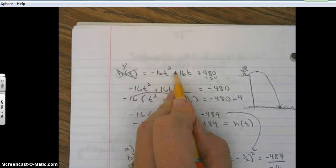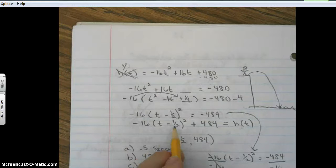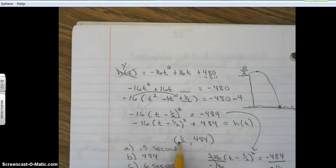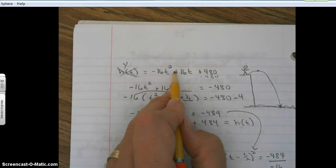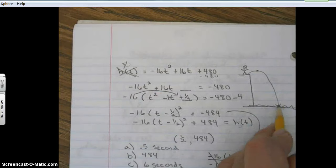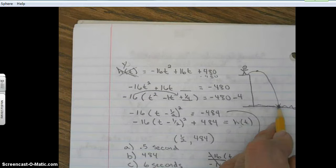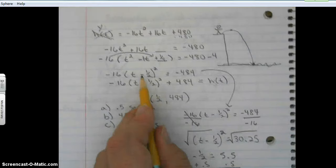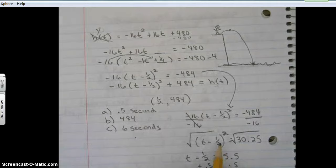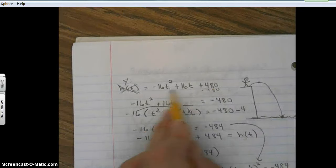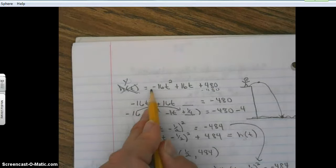When you're in standard form and you're looking for a maximum or minimum, we change it to vertex form. That gives us our vertex. If we're in standard form and we want to find out the x-intercept or when something hits the ground, then we want to either, if we're in vertex form, we can solve it like we did right here, or we can plug this into the quadratic formula and solve it.